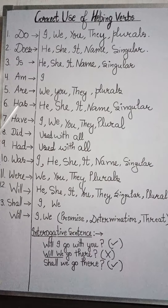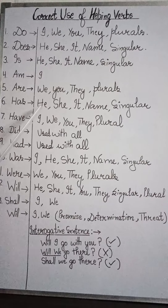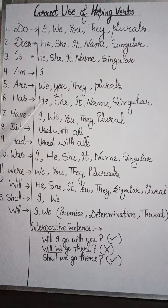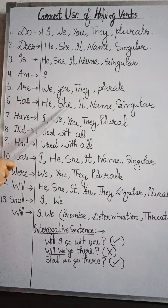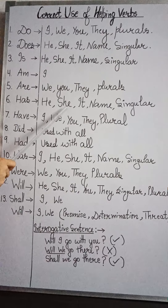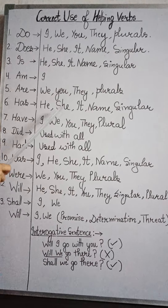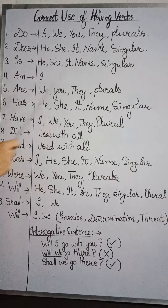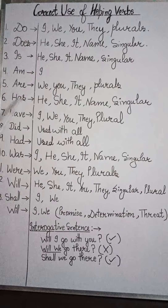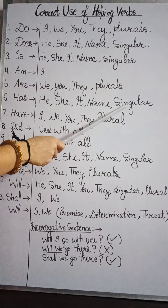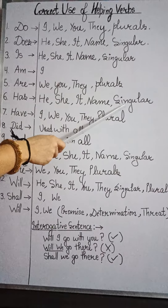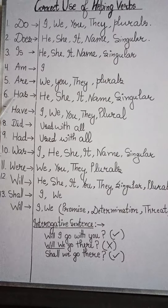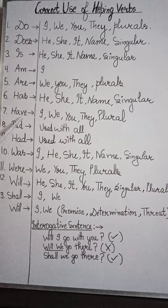उसके बाद 'has' और 'have' की बात करते हैं। 'Has' जो है हमेशा he, she, it, name और singulars के साथ लगाते हैं। जैसे हम कहेंगे 'he has done his work,' 'she hasn't submitted her assignment,' 'it has broken।' किसी भी name के साथ भी हम 'has' का ही use करेंगे जैसे 'Rita has gone।' कोई भी singular हो जैसे 'bird has flown' — इन सभी के साथ helping verb 'has' लगाएंगे।